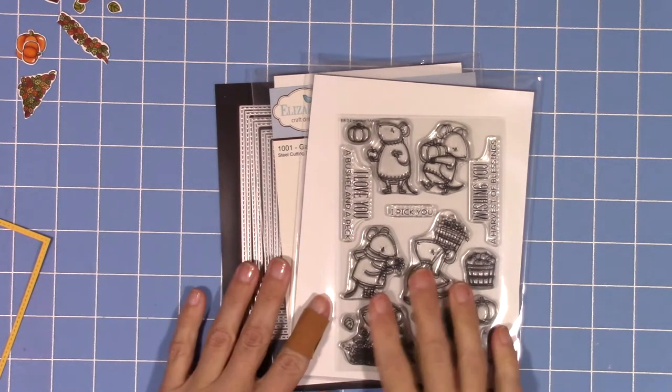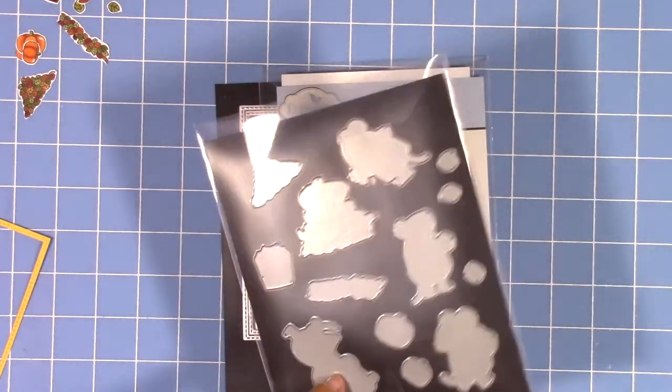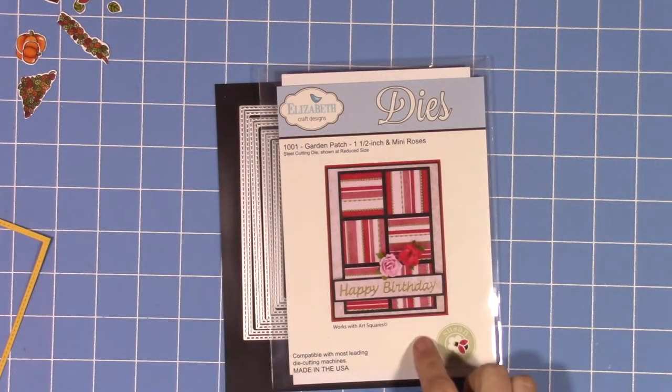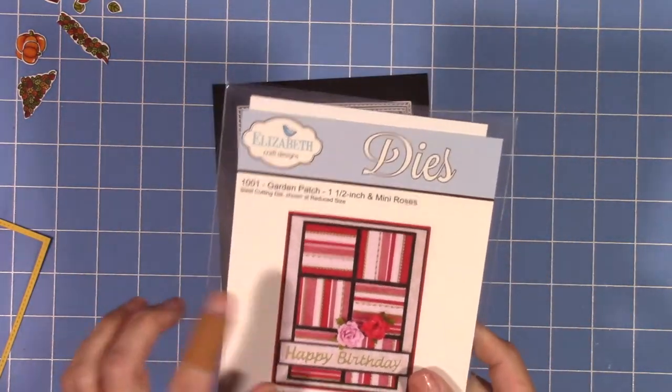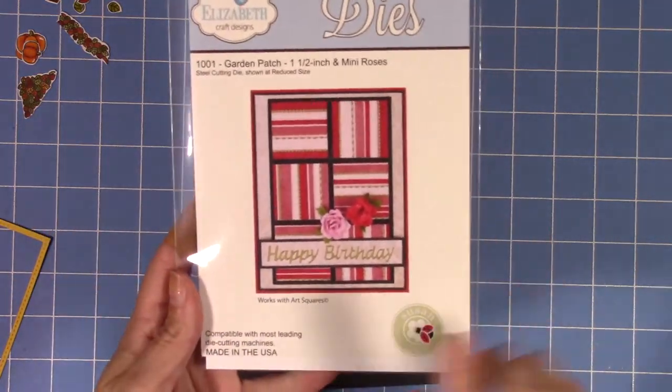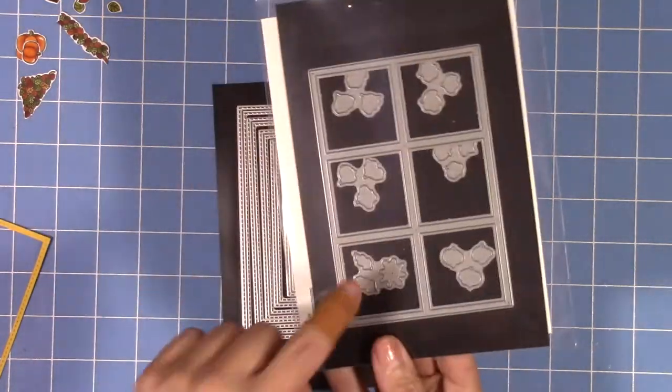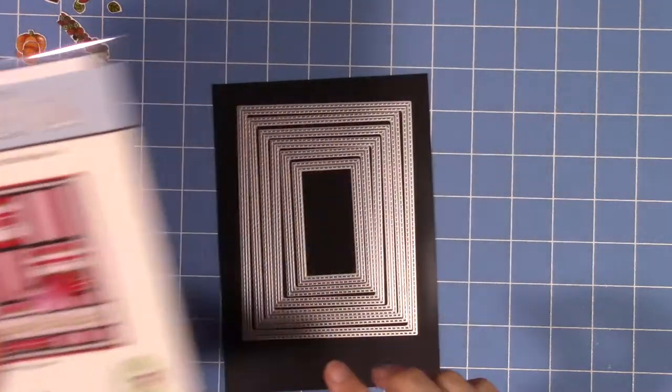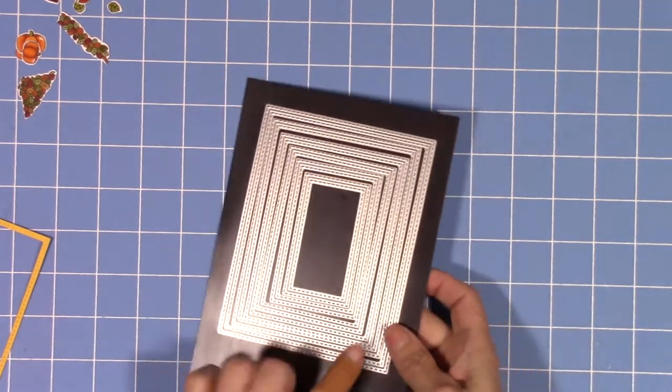For my last card using the stamp set, it's going to be a shaker card. Since I don't have a window die yet in my stash, I got this at the scrapbook expo clearanced out for like five bucks. I'm going to cut that down and turn it into a window.